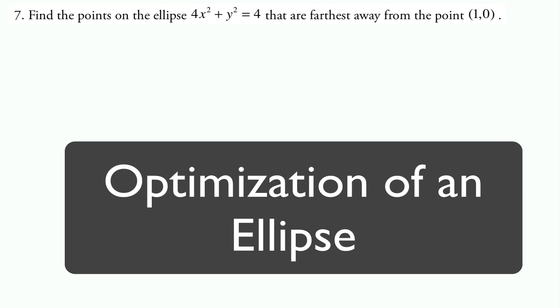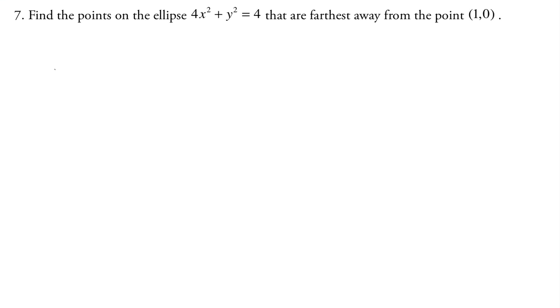Okay, so now this is an optimization problem. We're trying to figure out the points on the ellipse that are farthest away from the point (1,0). So you don't really need to graph the ellipse to answer the question, but it probably would help to give you a visual.